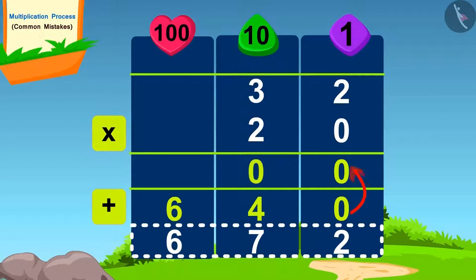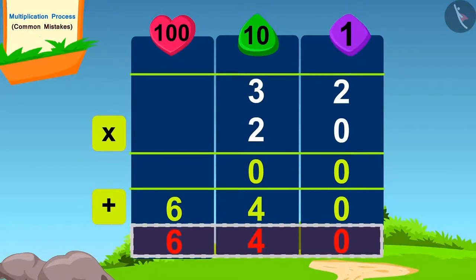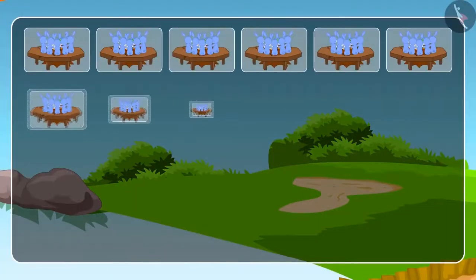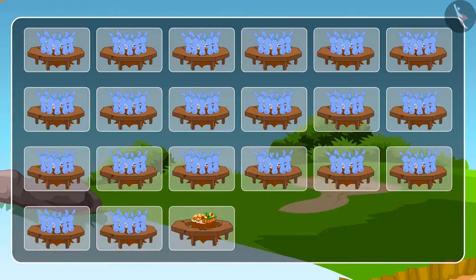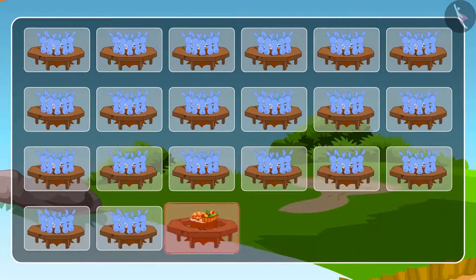Well done children! You have found the answer to this correctly. Only 640 rabbits were to arrive at the party. While calculating, Shere Khan made a mistake and he counted 32 more. Therefore, those seats were left empty.